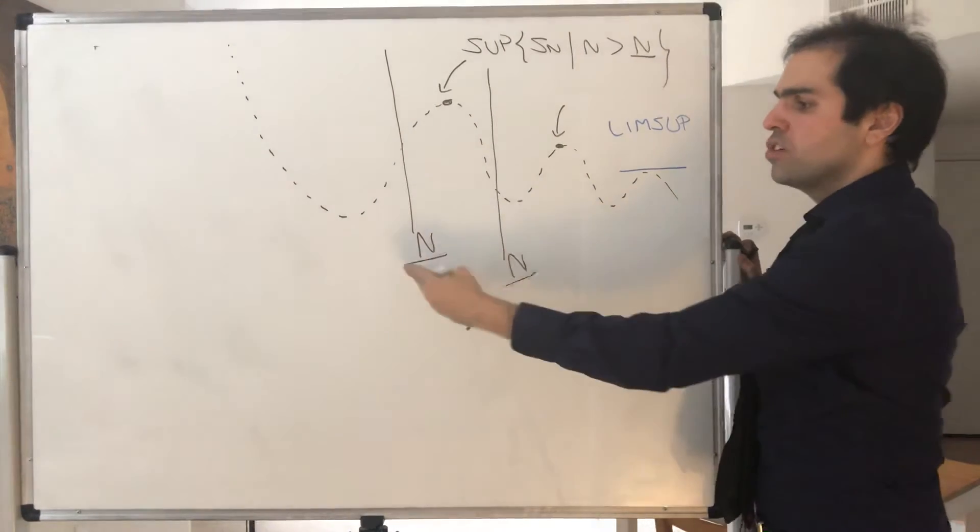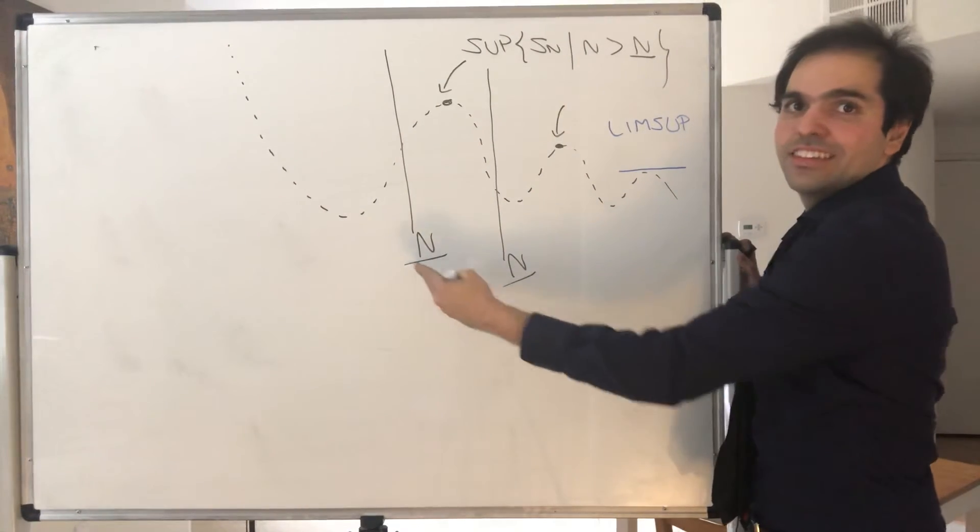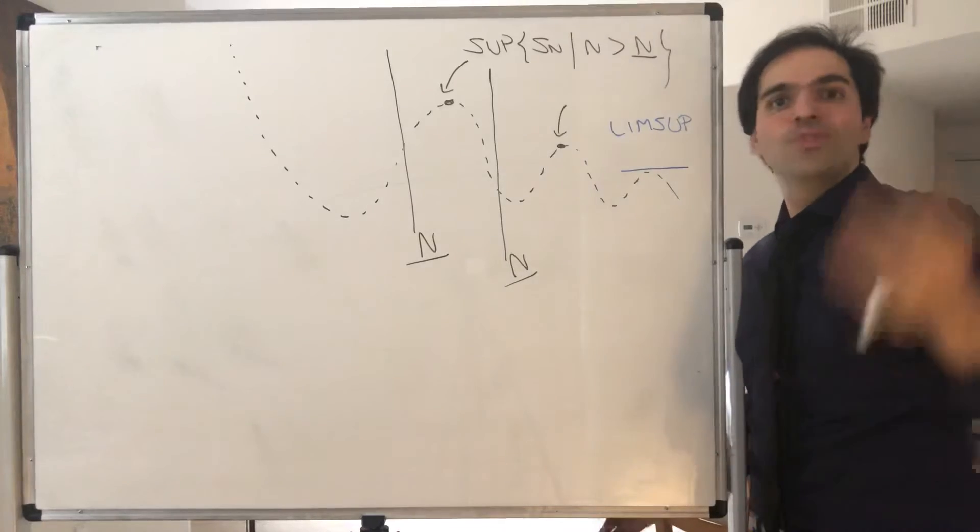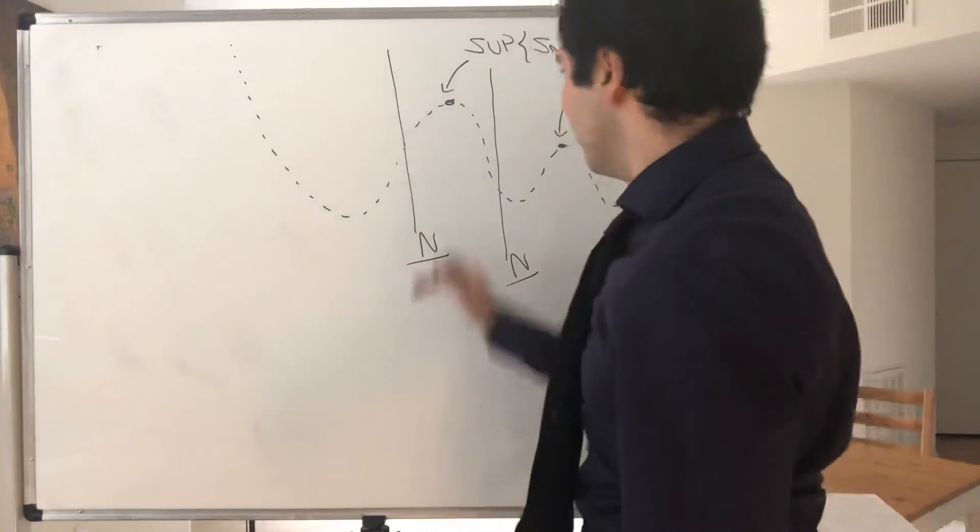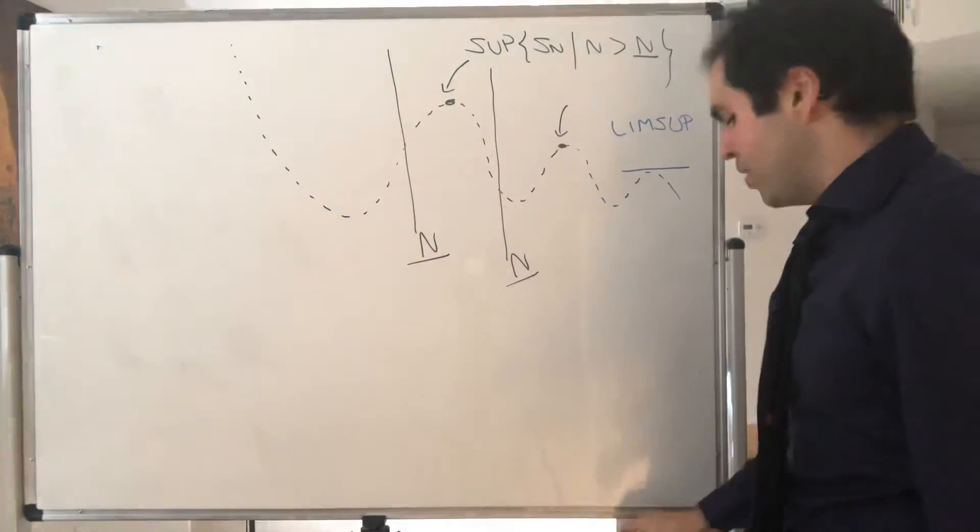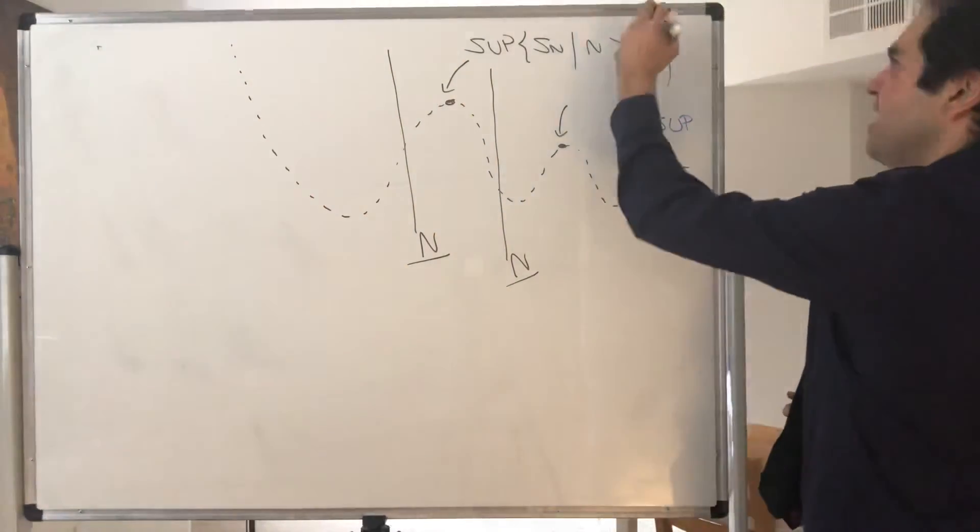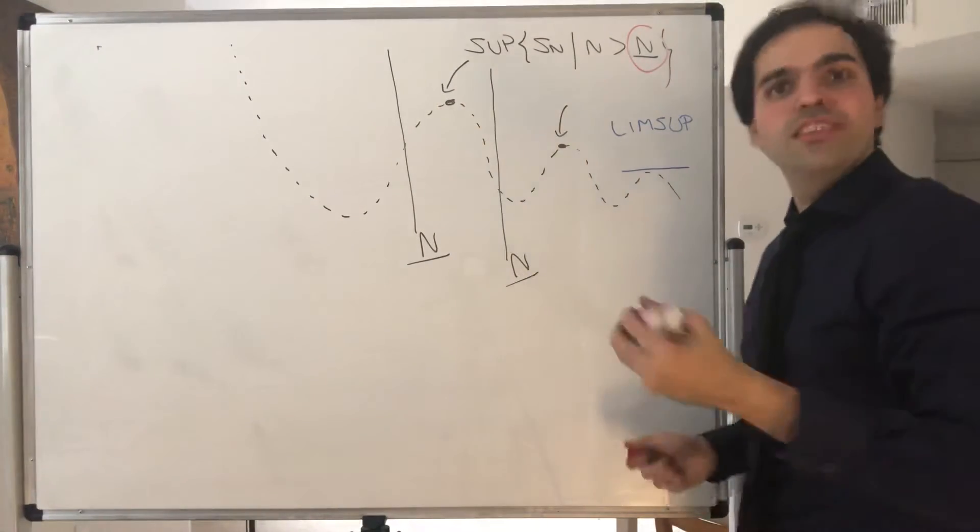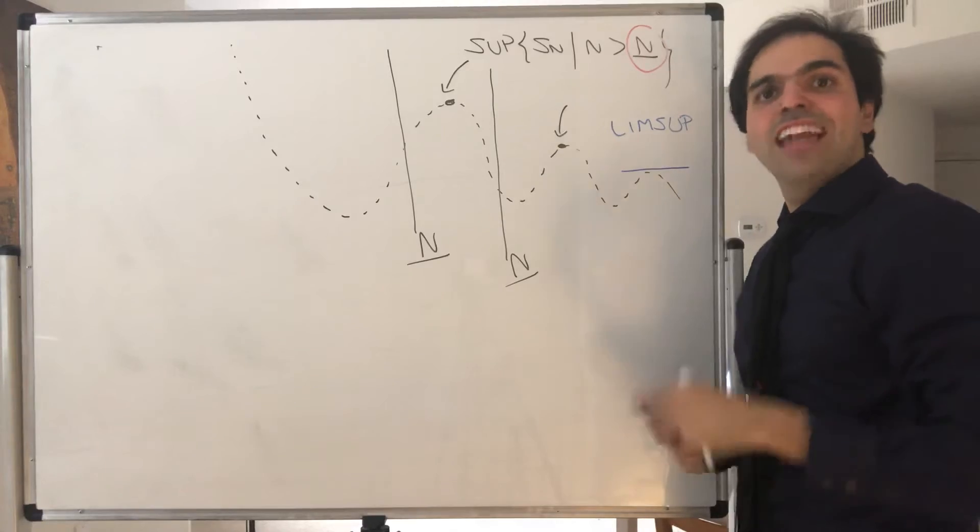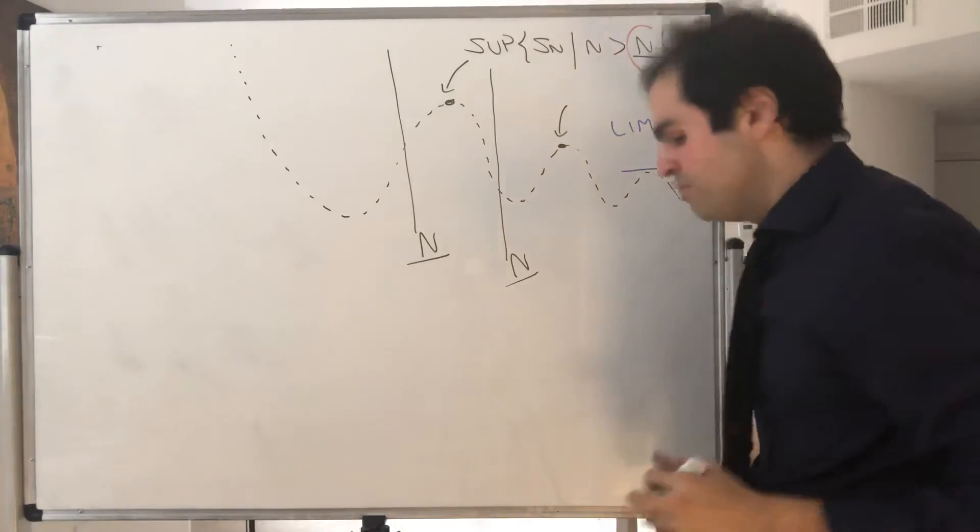It's like an excellent student who dropped a class, then of course the average will be lower. And in particular, notice this sequence, which depends on capital N, is actually decreasing. And since it's decreasing and bounded below, it converges, and it's that limit that we'll call limsup.